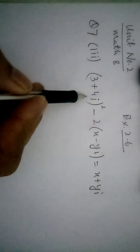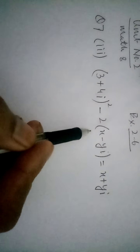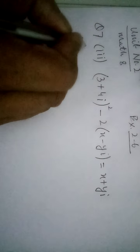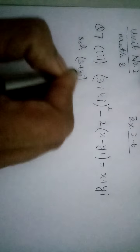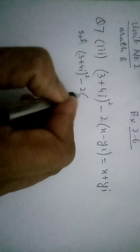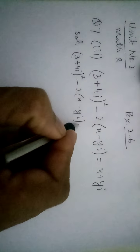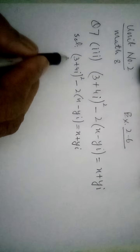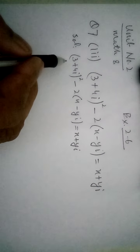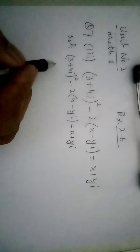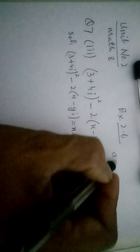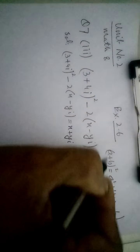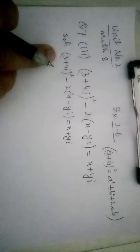2x plus 4y iota ka whole square minus 2 into x minus y iota is equal to x plus y iota. So by solving, 3 plus 4 iota ka whole square minus 2 into x minus y iota is equal to x plus y iota. We will open this bracket. As we know that a plus b ka whole square is equal to a square plus b square plus 2ab. Kindly is formulae ki madad se ye bracket open karenge.